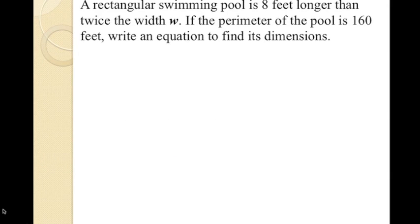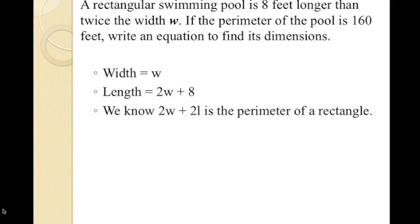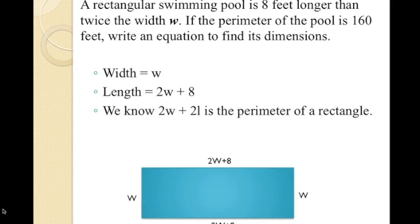We know that w will represent the width in this equation. When we read the sentence, we know that the length is twice the width plus 8. We also know that when dealing with perimeters, the normal equation is twice the width plus twice the length. Therefore, we can write our equation as 2w plus 2 times (2w plus 8) equals 160. Here, we replaced l with 2w plus 8 to find our equation.